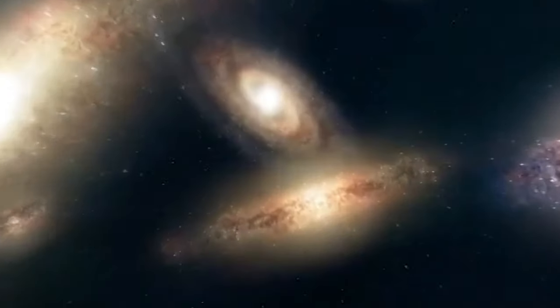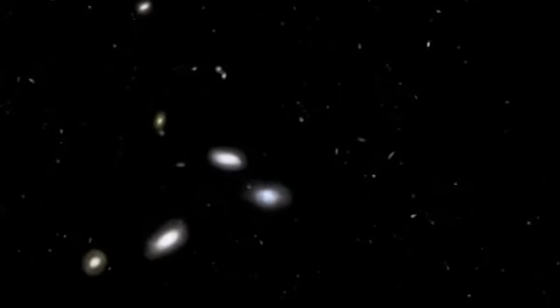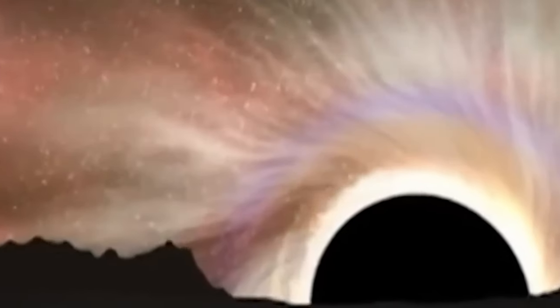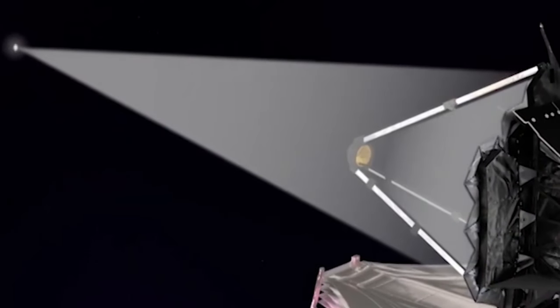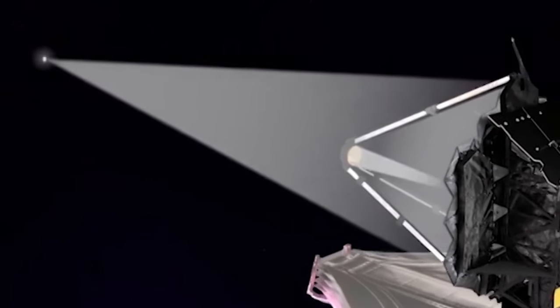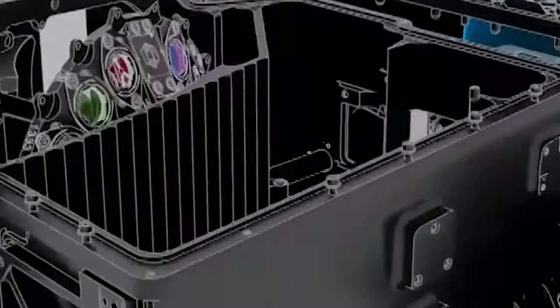It is through the synergy of these instruments that the JWST has recently made a groundbreaking discovery, one that challenges the foundations of our cosmic understanding. In a revelation that has left the scientific community astounded, the James Webb Space Telescope has detected the presence of 700 galaxies trapped within the gravitational clutches of a black hole.